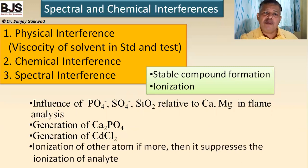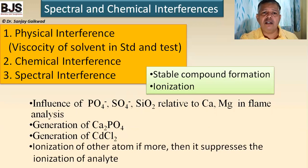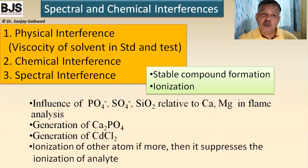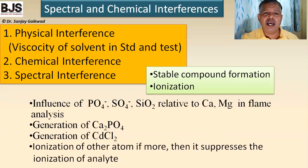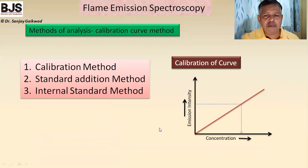Another chemical interference is ionization — when other atoms are highly ionized, they can affect the transformation and emission in the flame. Spectral interferences occur when two metal ions emit radiation at very close wavelengths. In such cases, one metal ion must be masked and then the other metal is measured. These interferences should be minimized before aspirating the sample solution, ensuring all interferences are removed.